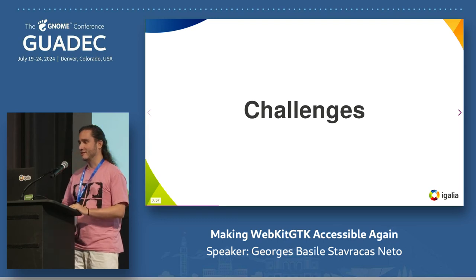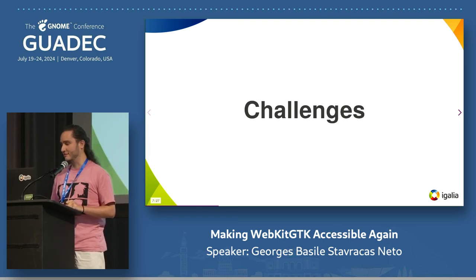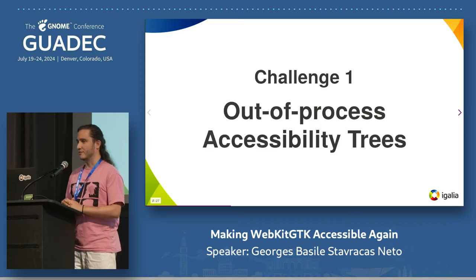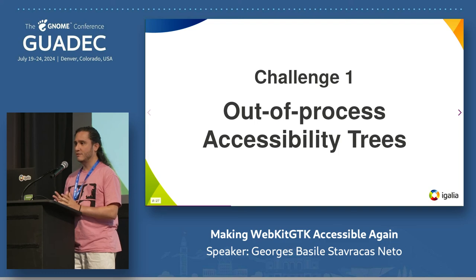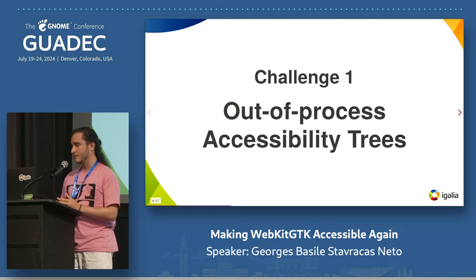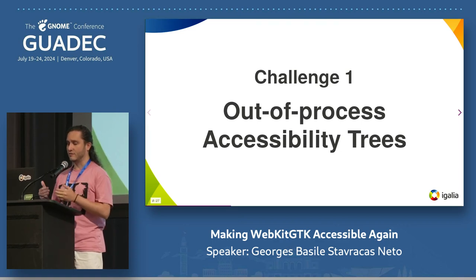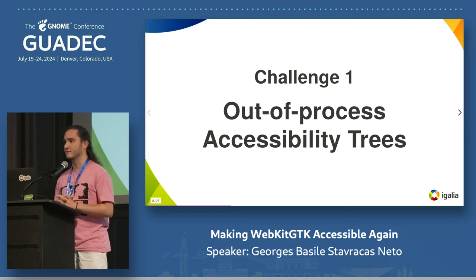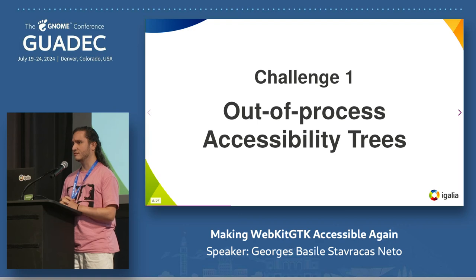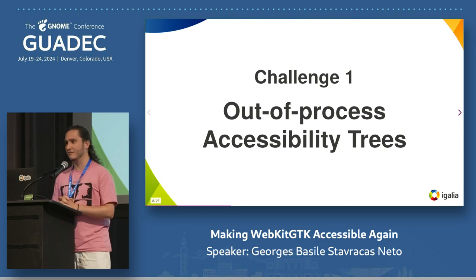Let's talk a little bit about the challenges of making a web engine accessible. The first one is kind of specific to WebKit GTK and GTK 4: out-of-process accessibility trees. One very important security measure — which I think all browsers implement these days — is to separate the bits of code that interact with the web page into a separate process, and they usually put that separate process in some sort of sandbox.